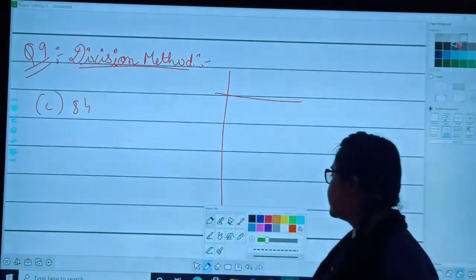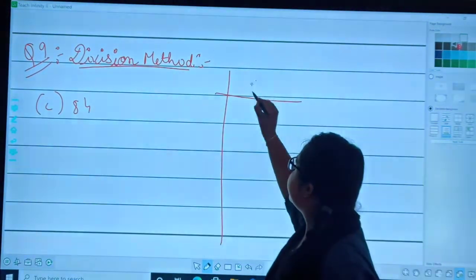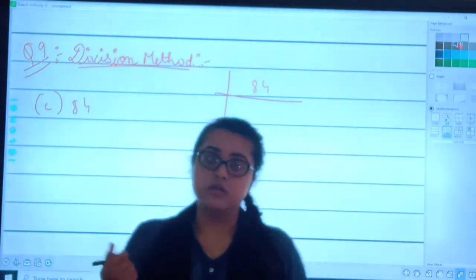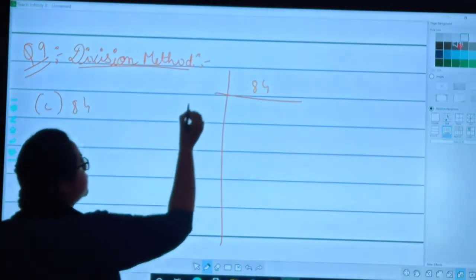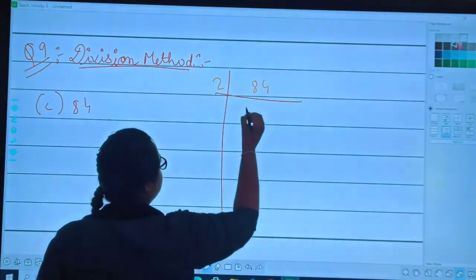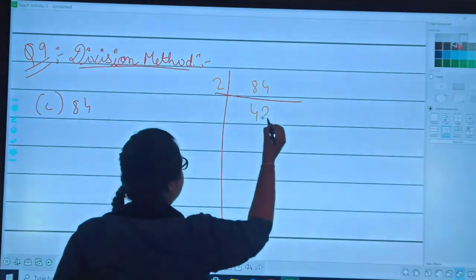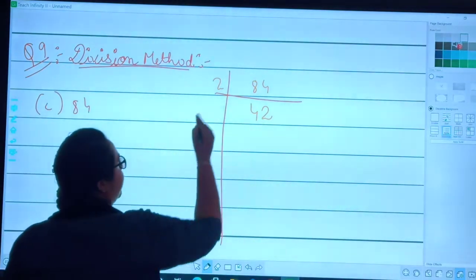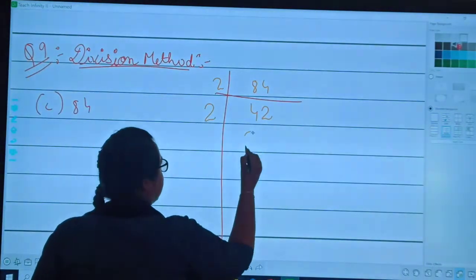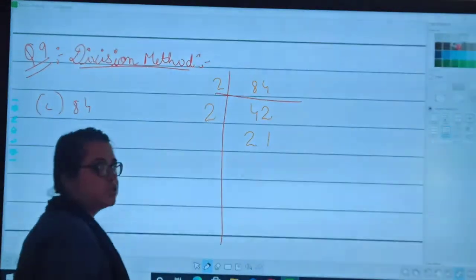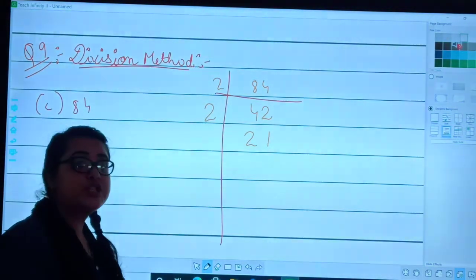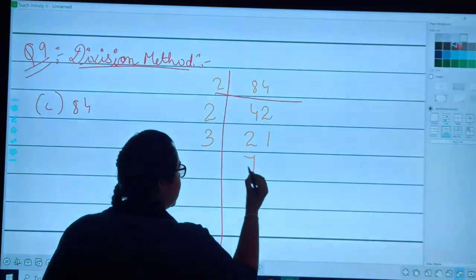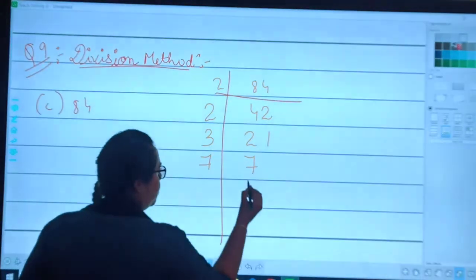Now I have to be starting with the division method. 2, 42; 2, 21. Now I will again divide it: 3, 7; 7, 1.